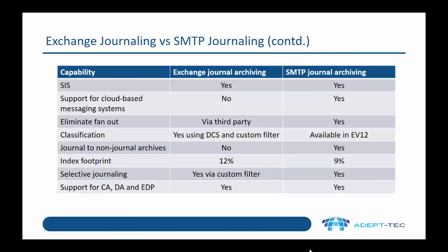Let's compare exchange journaling against SMTP journaling in more detail. First of all, single instance storage — both exchange journal archiving and SMTP journal archiving both support single instance storage. Regarding support for cloud-based messaging systems such as Office 365, the traditional exchange journal archiving can't support this, whereas one of the big benefits of SMTP journal archiving is that it can archive from systems like Office 365.